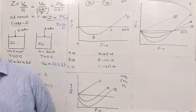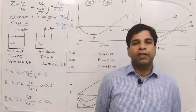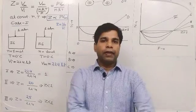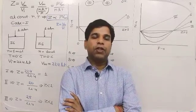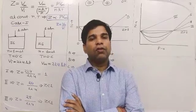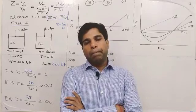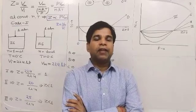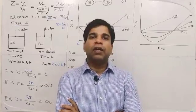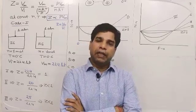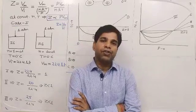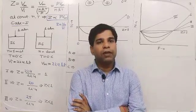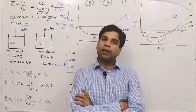Good morning students. In today's session, we will discuss the compressibility factor and different graphs of the compressibility factor versus pressure. We know that the ideal gas equation PV = nRT holds under conditions of very high temperature and low pressure. But as temperature decreases or pressure increases, any gas cannot follow the ideal gas condition. The extent of deviation from ideal gas behavior can be calculated in terms of the compressibility factor or compression factor.